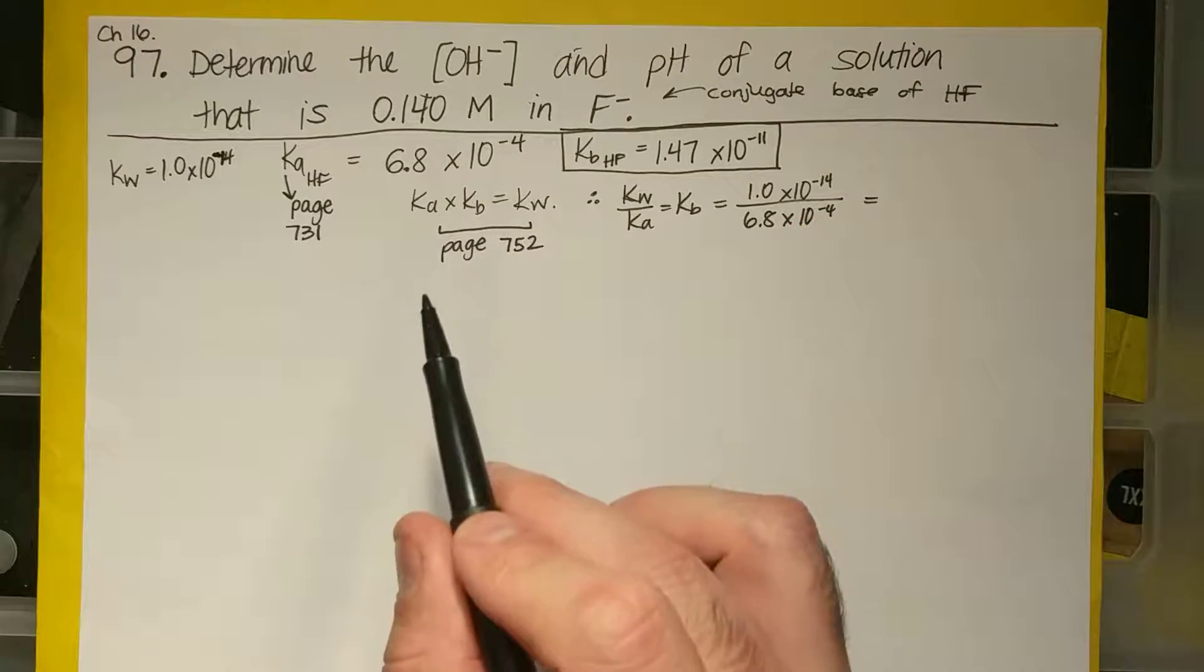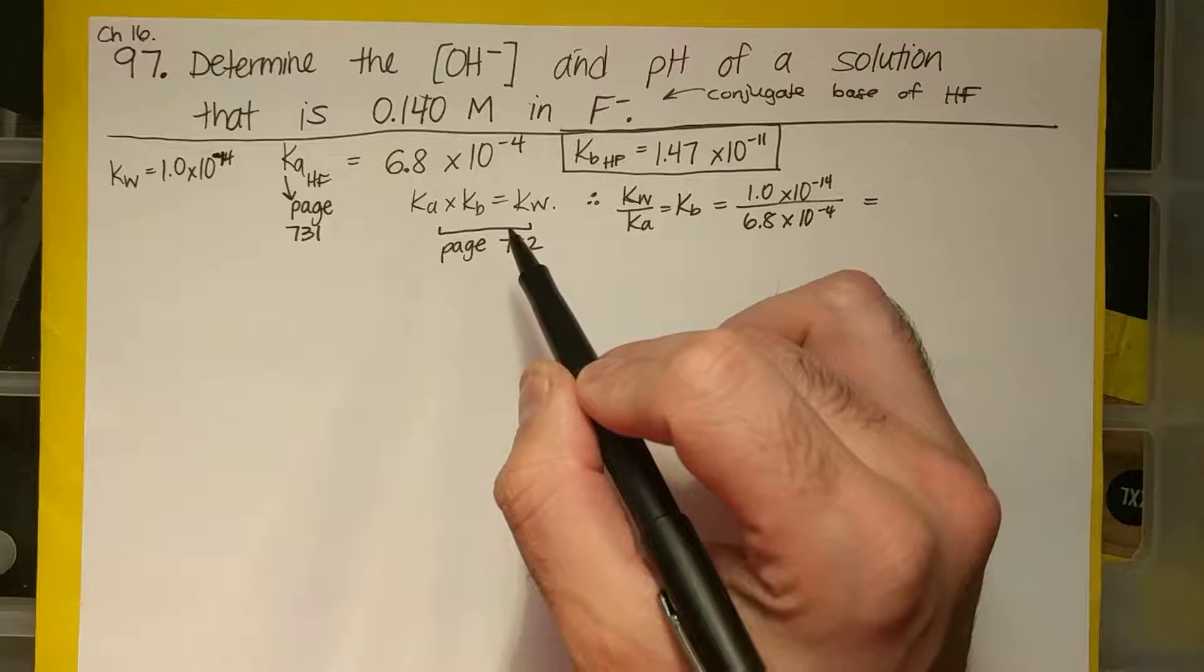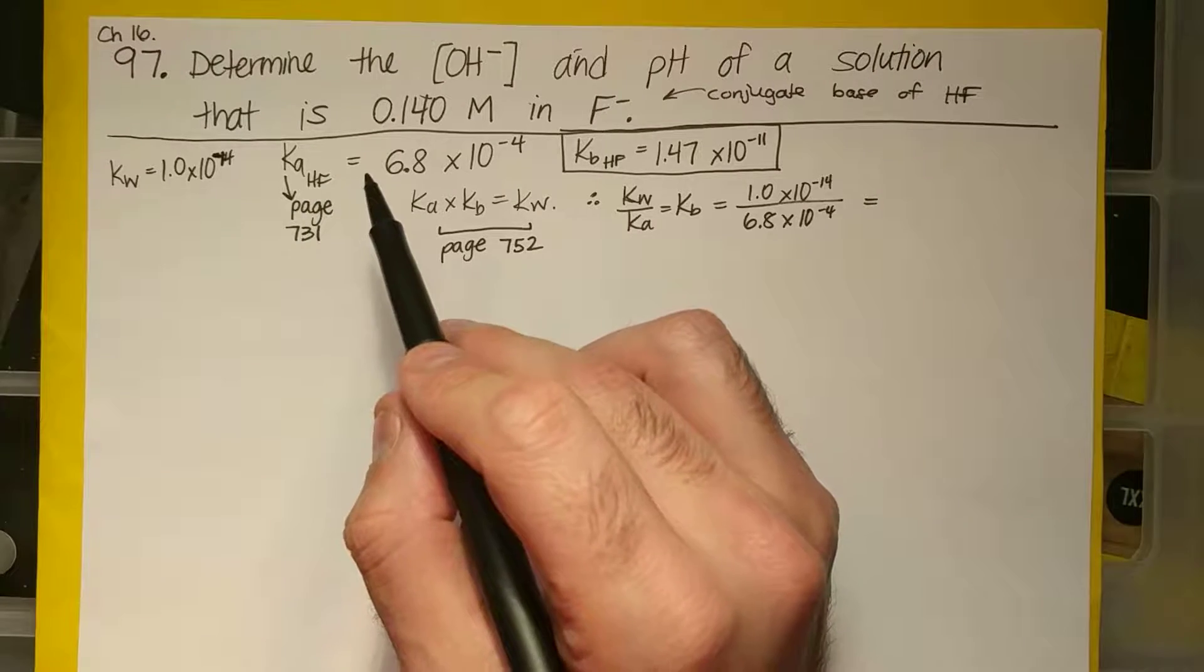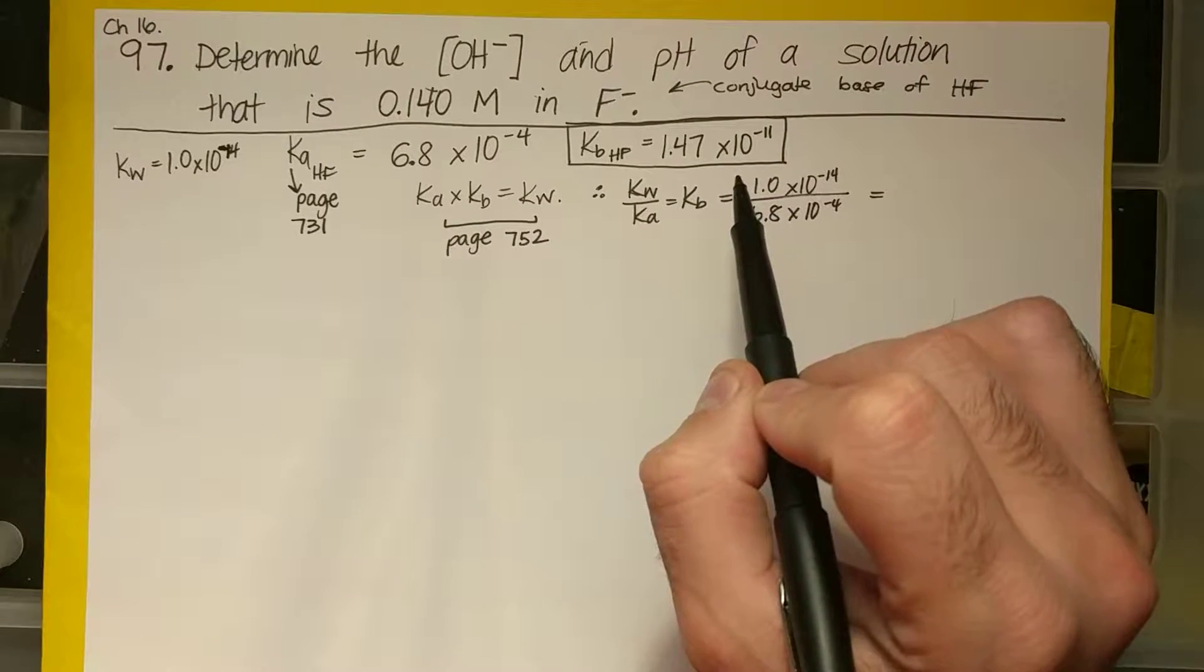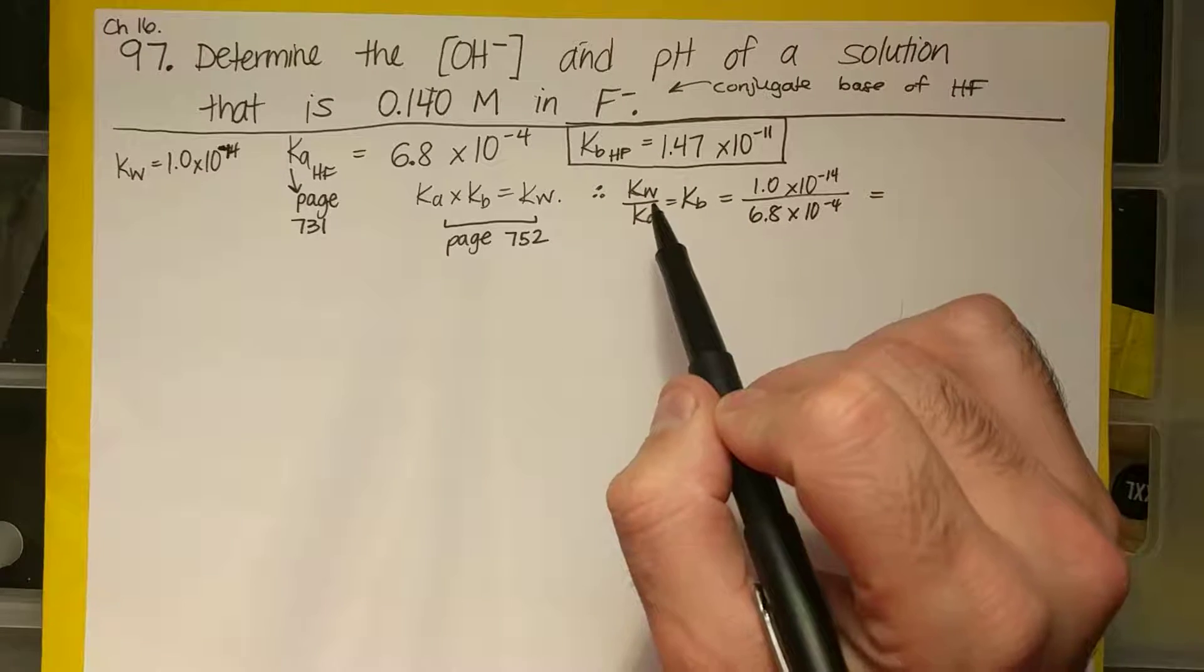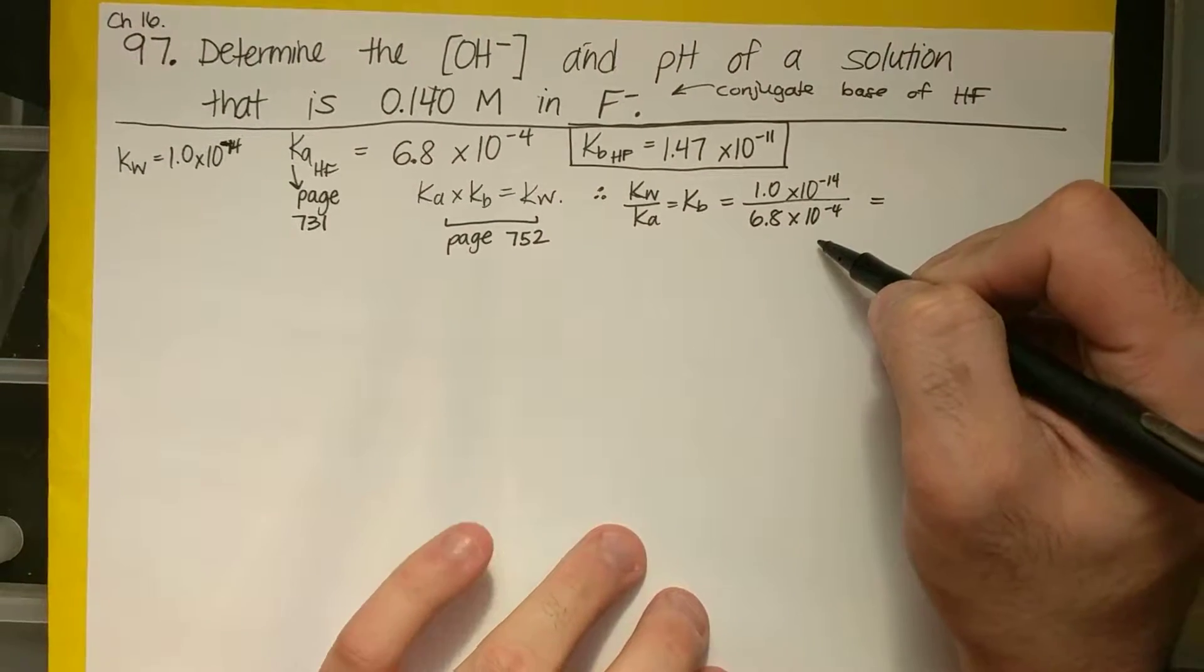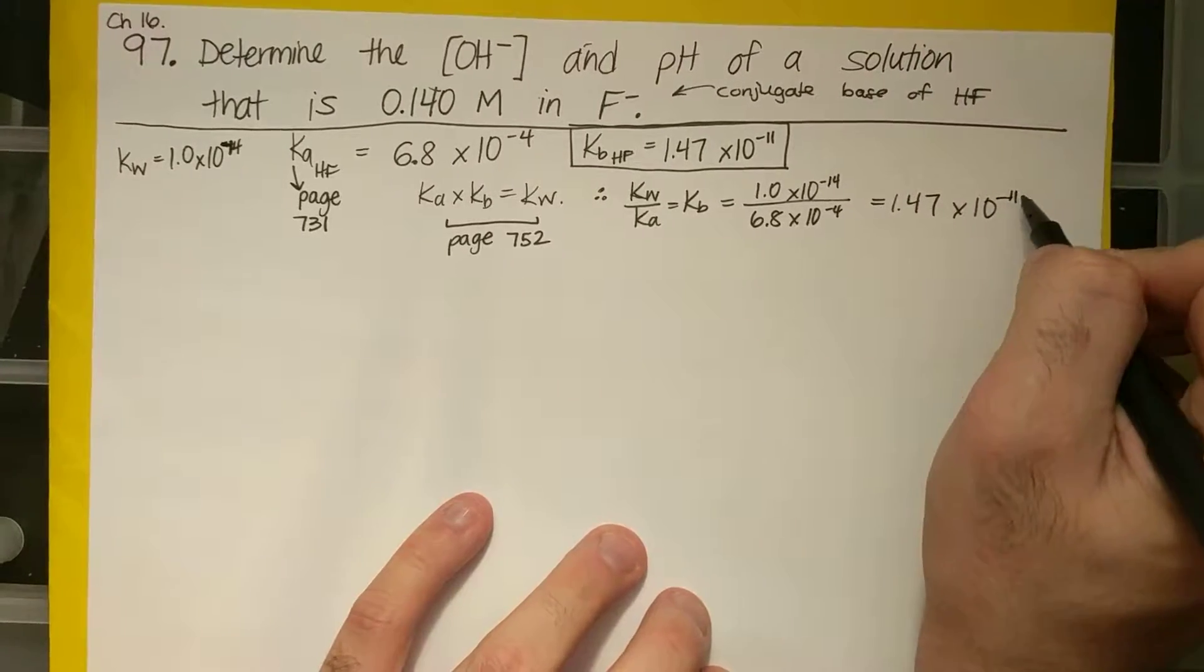KA is the acid dissociation constant. KB is the base dissociation constant. And they are related because the product of the two of them is equal to this KW, which is the auto-ionization constant of water. Therefore, if I want to solve for KB, KW over KA equals KB. So I did 1.0 times 10 to the minus 14th divided by 6.8 times 10 to the minus 4th, and I got 1.47 times 10 to the minus 11th.